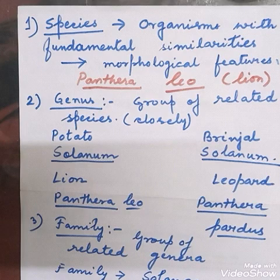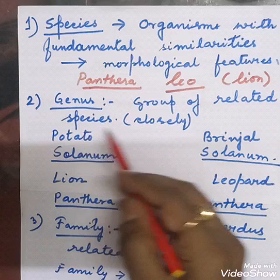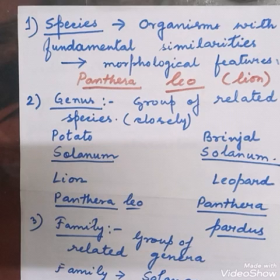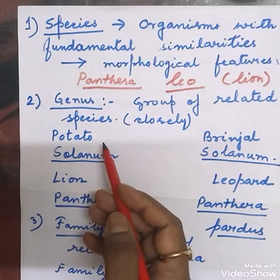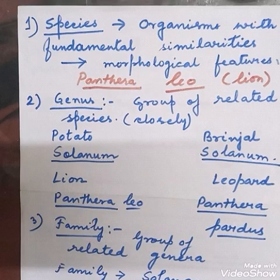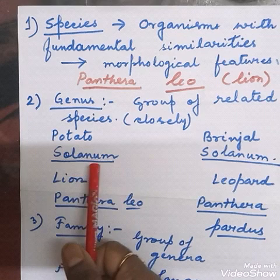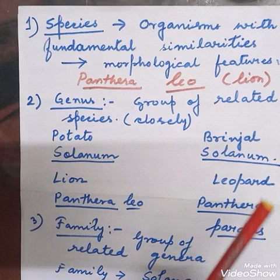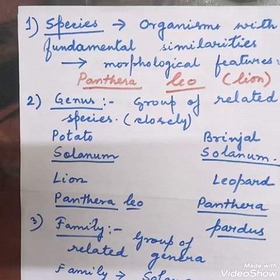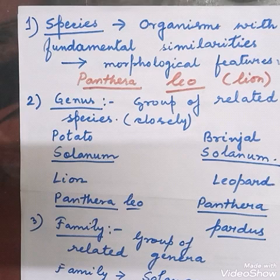Next is genus. Genus is a group of related, closely related species. For example, potato and brinjal are closely related and grouped into the same genus — Solanum. Similarly, lion and leopard are grouped into the same genus — Panthera — because of their closely related characteristic features. All closely related species come under the group called genus.